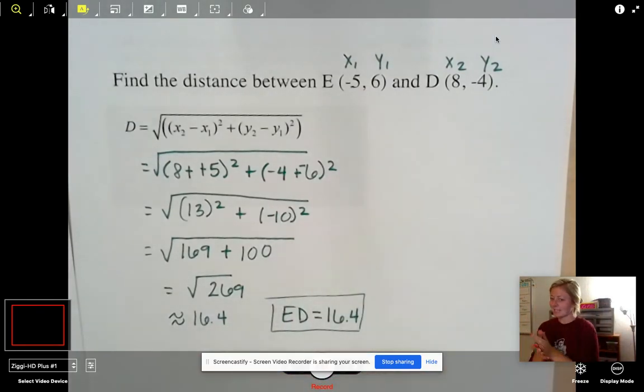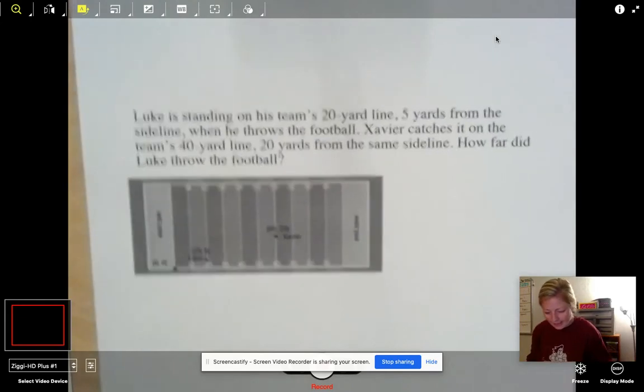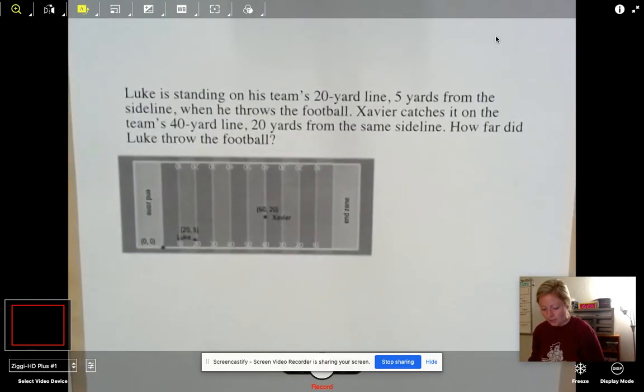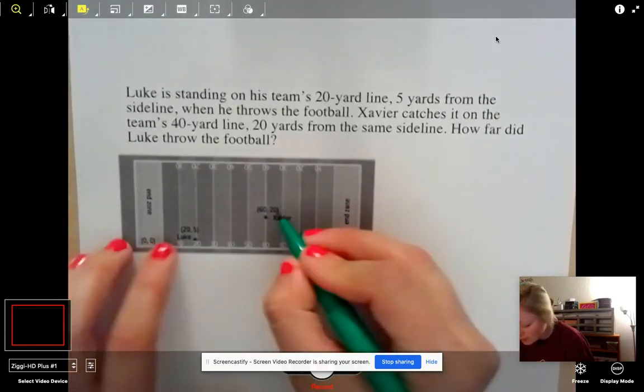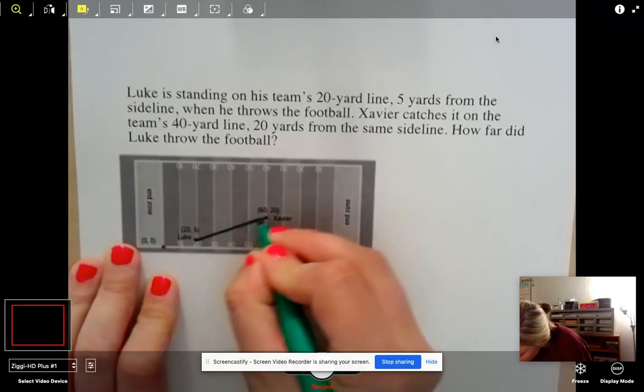Did you get it? I'll ask you in class if you got it because I have no idea, but let's hope you did. We have one problem left. A little application here. So it says Luke is standing on his team's 20 yard line, five yards from the sideline when he throws the football. Xavier catches it on the team's 40 yard line, 20 yards from the same sideline. How far did Luke throw the football? So you can probably see it a little bit better on your copy, but they give us these coordinates, right? And our job is to figure out what distance did the ball travel from Luke to Xavier.